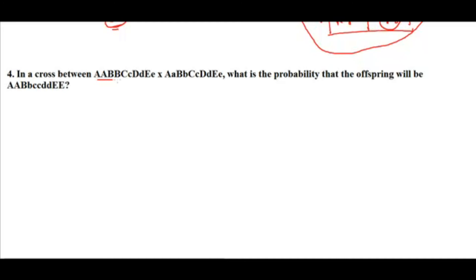This problem involves a cross between two parents with five genes each. What is the probability that the offspring will be a particular combination? Don't get scared by the number of genes — we will take one gene at a time, which makes the problem very easy to solve.